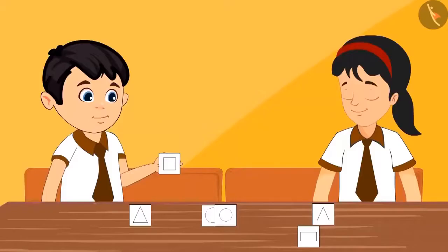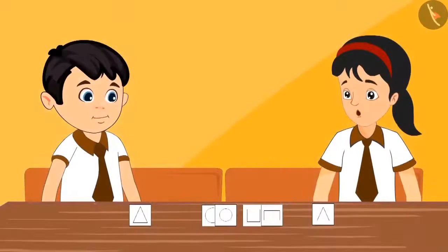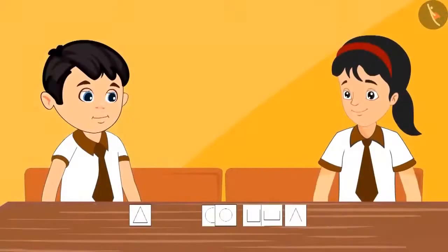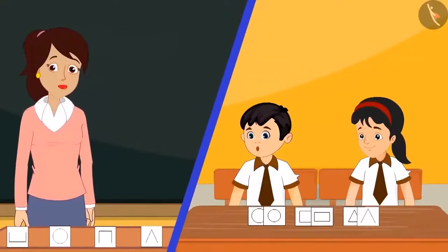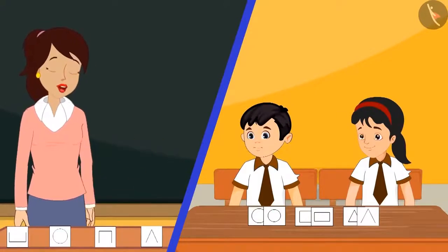Chotu and Pinky sorted all the cards by their shapes and told the teacher they were done. The teacher praised them: 'Wow, Chotu! Wow, Pinky! You have sorted these cards perfectly.' The teacher explained: 'This is a round-looking shape and we call it a circle.' Pinky asked if another card was also a circle, and the teacher confirmed it was. The teacher then showed the rectangle and the square, noting that both are made of four lines.